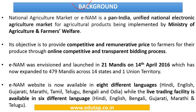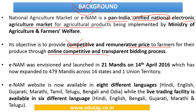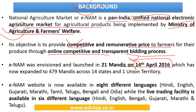Let's go into the background and discuss what exactly the E-NAM platform is, what was its need, and its objectives. E-NAM is a Pan-India Unified National Electronic Agriculture Market for agricultural products, aimed at providing competitive prices to farmers through an online bidding process. It creates a unified market through an online trading platform so that farmers can get competitive and remunerative prices. It was launched in 21 Mandis on 14th April 2016 and is implemented by the Ministry of Agriculture and Farmers Welfare. The E-NAM website is available in 8 languages and the trading facility in 6 languages.